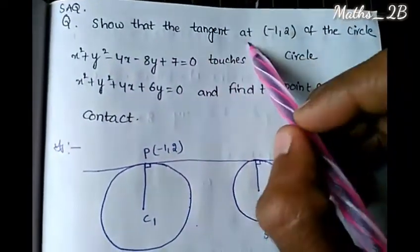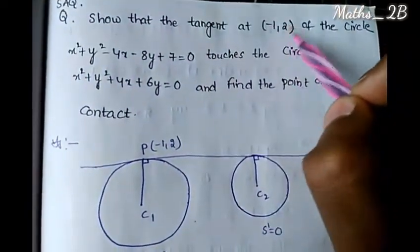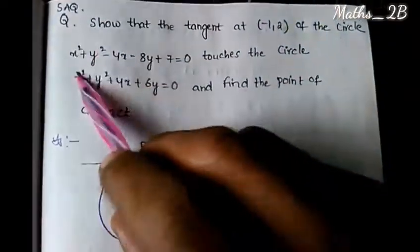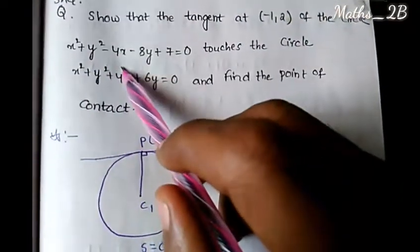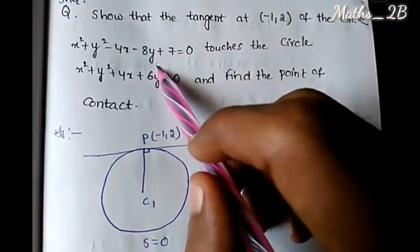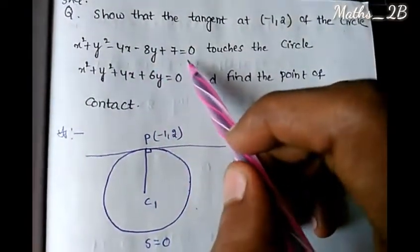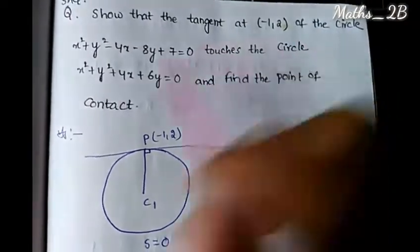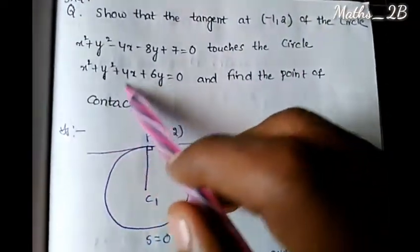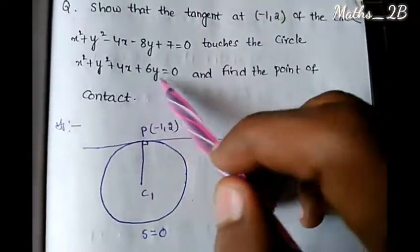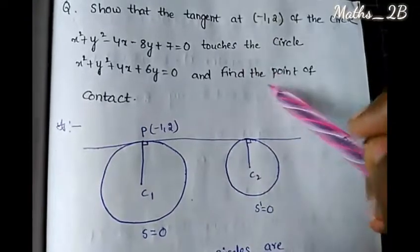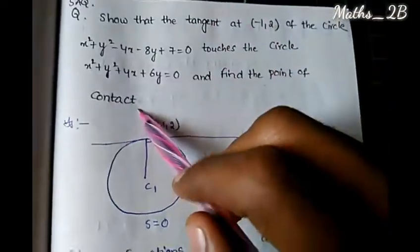Show that the tangent at minus 1 comma 2 of the circle x squared plus y squared minus 4x minus 8y plus 7 equals 0 touches the circle x squared plus y squared plus 4x plus 6y equals 0, and find the point of contact.